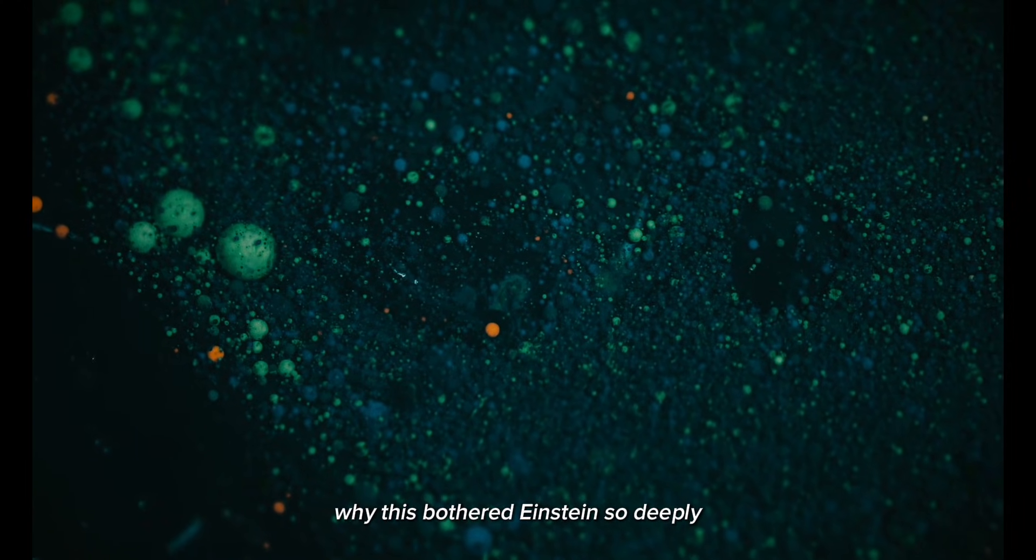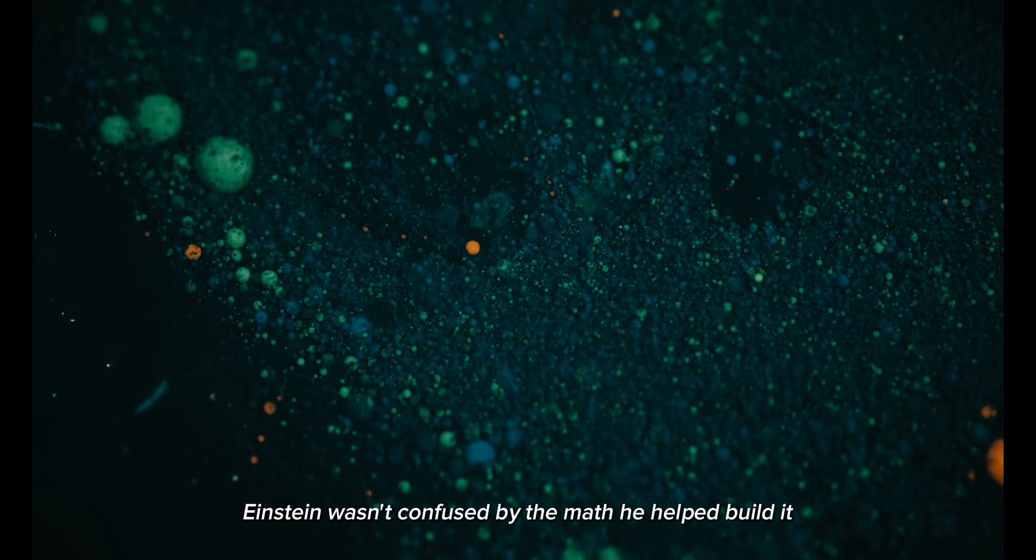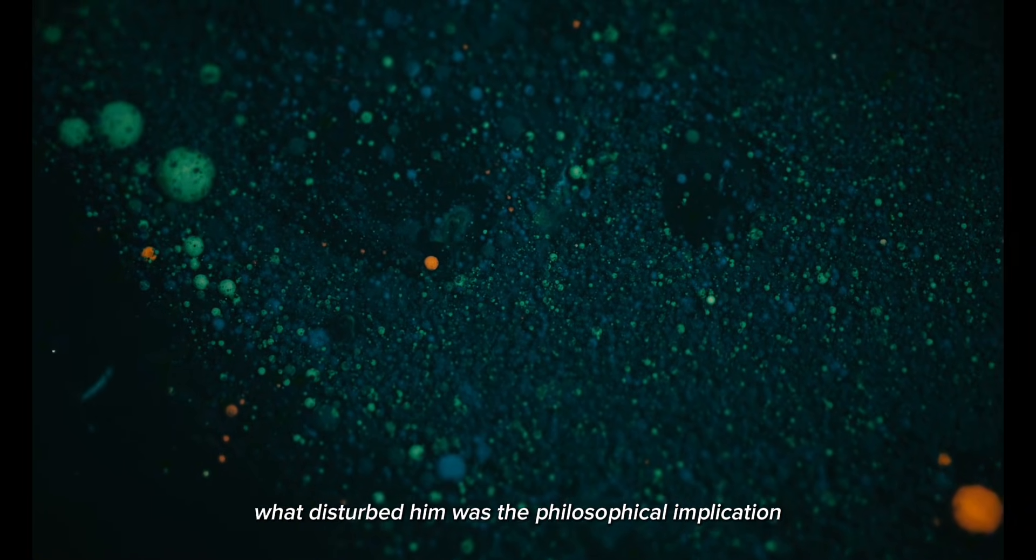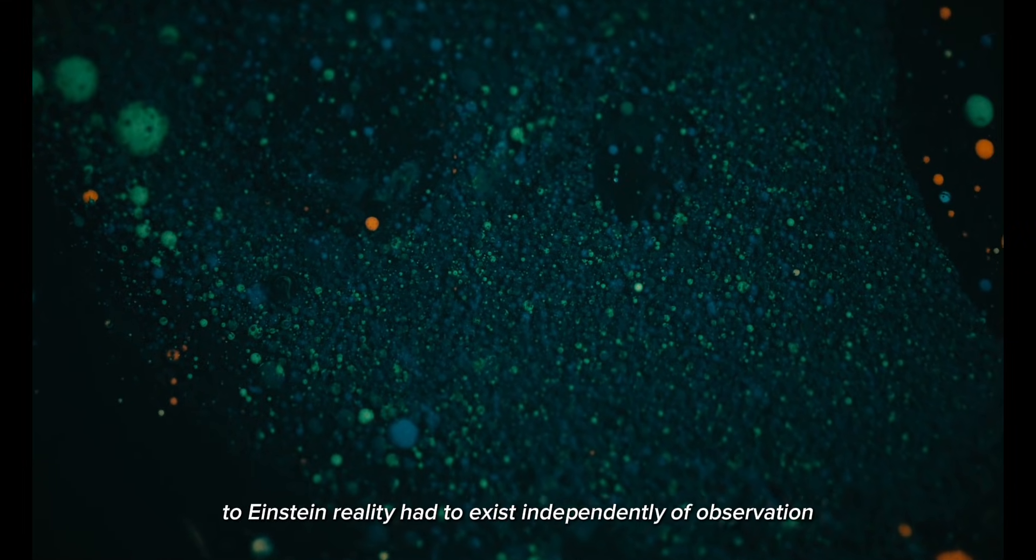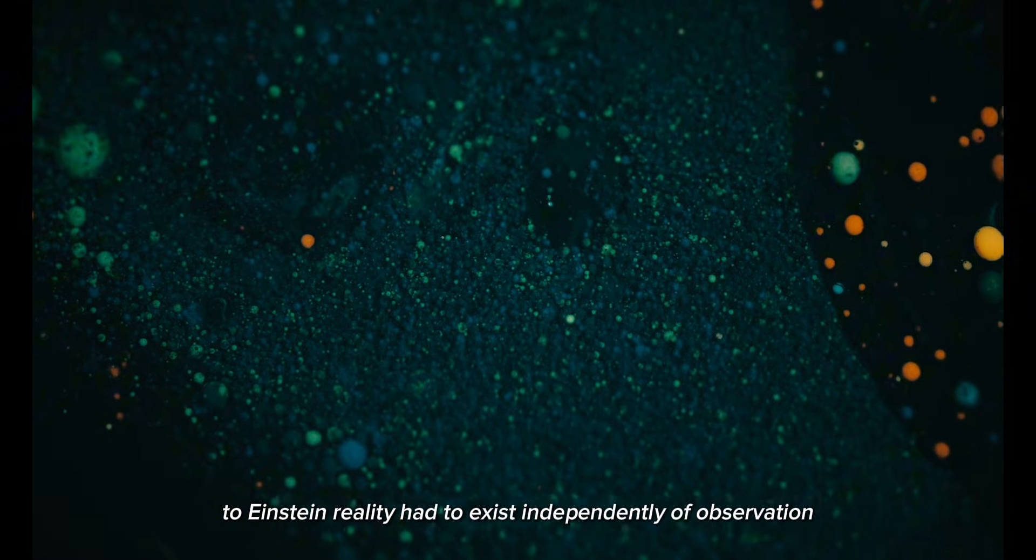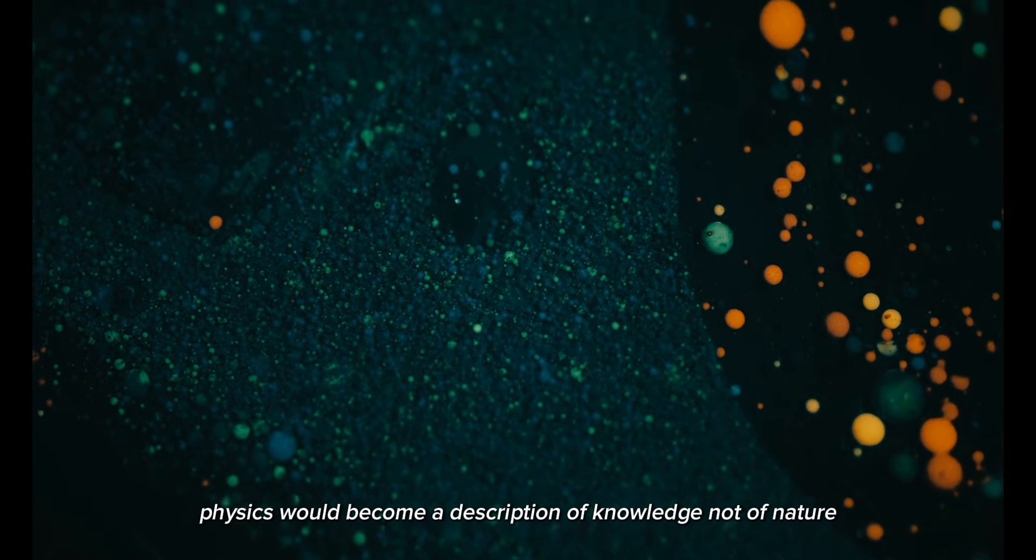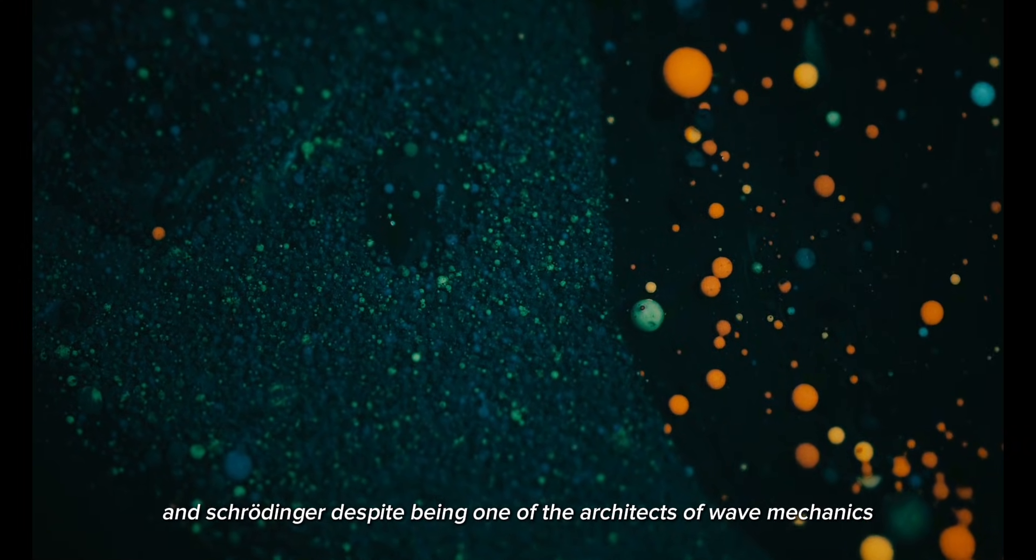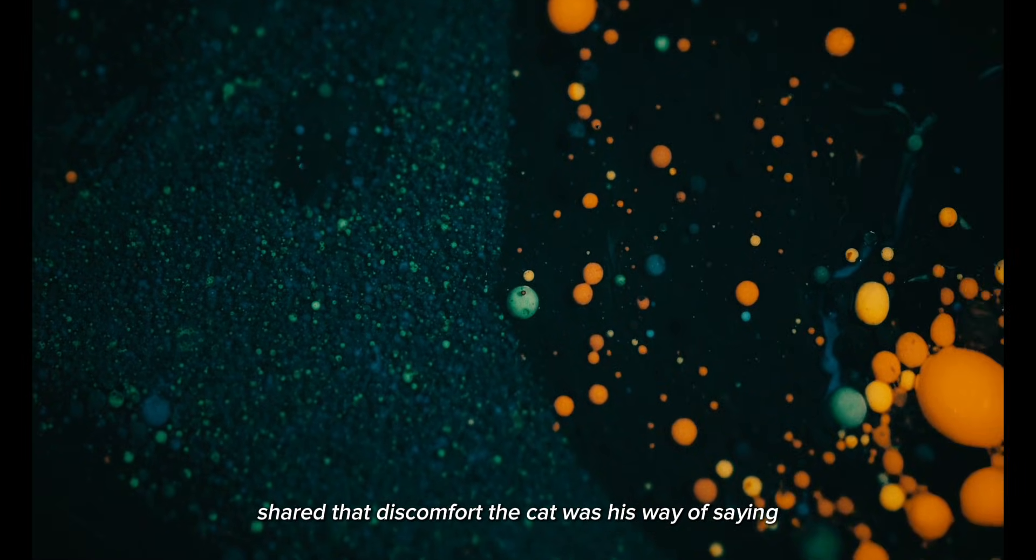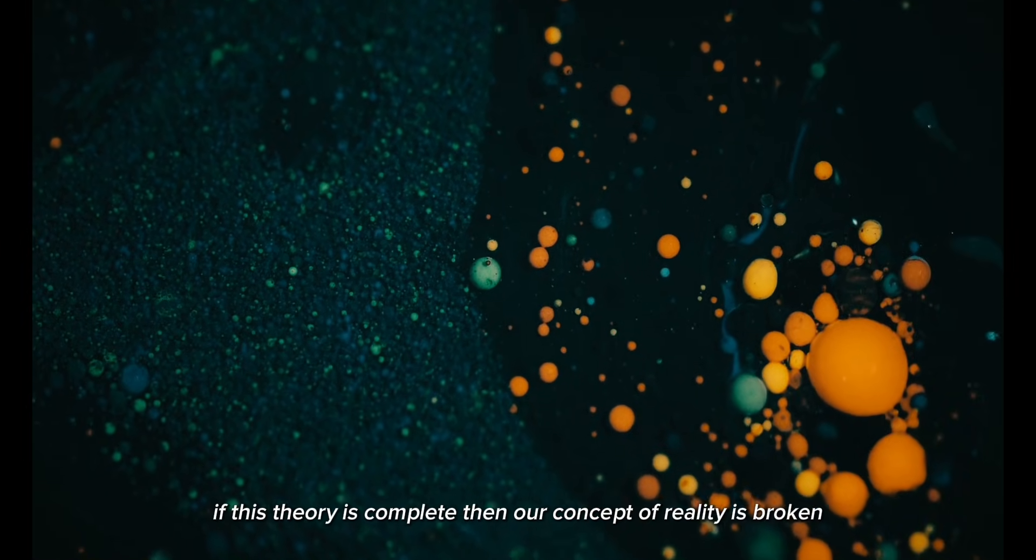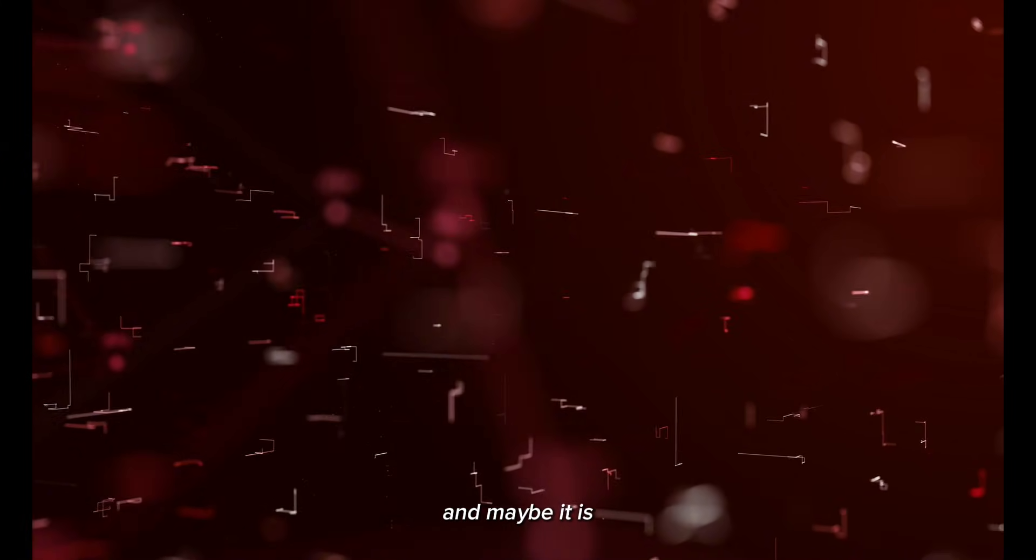Why this bothered Einstein so deeply. Einstein wasn't confused by the math. He helped build it. What disturbed him was the philosophical implication. A universe where outcomes are not determined until the last moment. To Einstein, reality had to exist independently of observation. Otherwise, physics would become a description of knowledge, not of nature. And Schrödinger, despite being one of the architects of wave mechanics, shared that discomfort. The cat was his way of saying, if this theory is complete, then our concept of reality is broken. And maybe, it is.